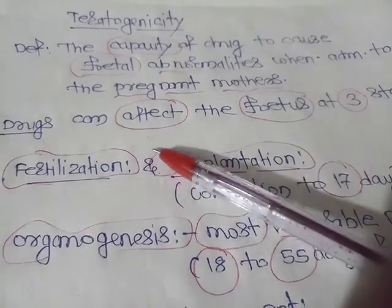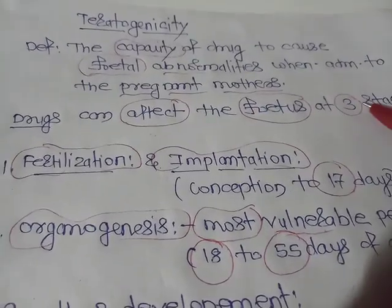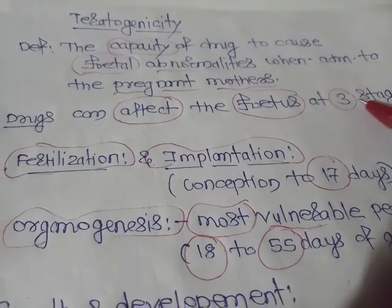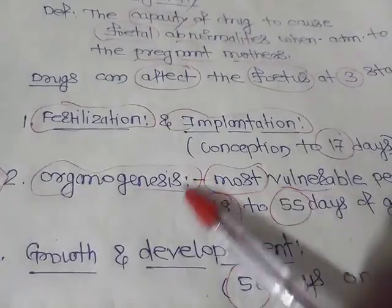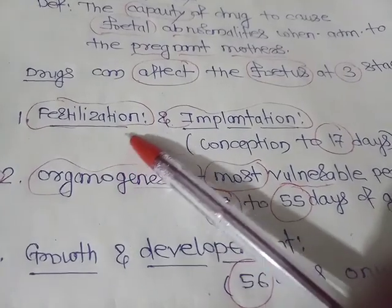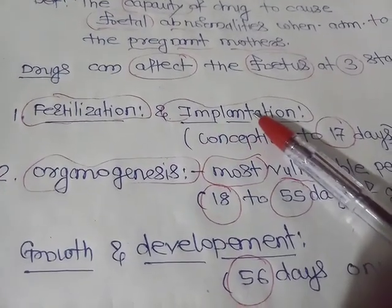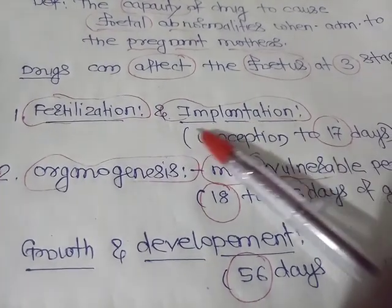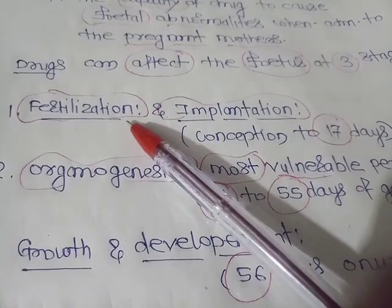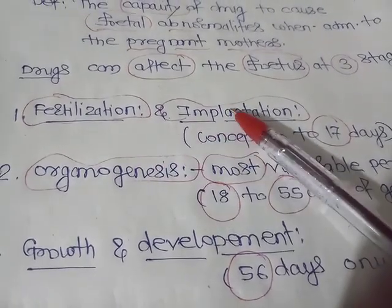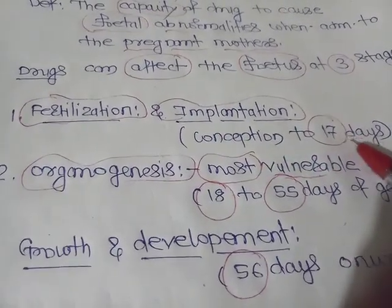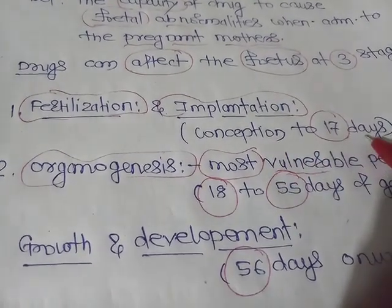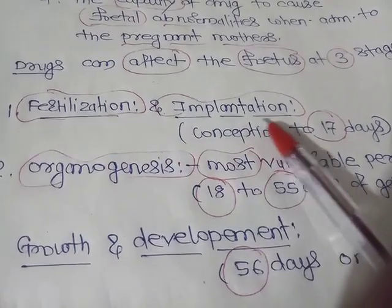Drugs can affect the fetus at three stages. First, they affect the fetus at the fertilization and implantation phase. If a drug is given in the first trimester, at the time of fertilization or implantation, that is from conception up to 17 days, this is the period of fertilization and implantation.